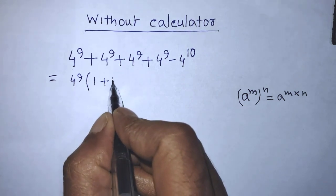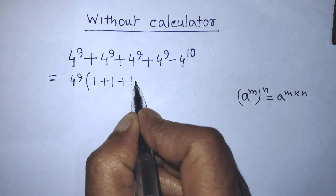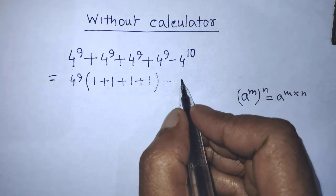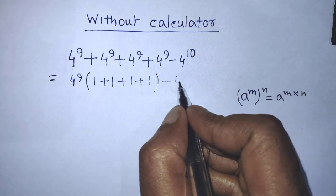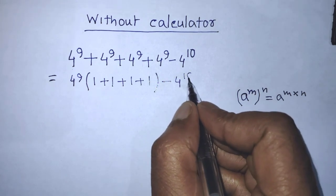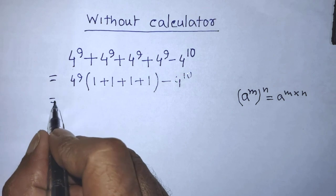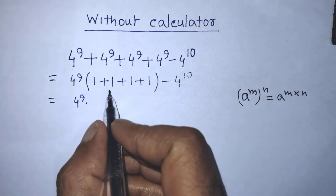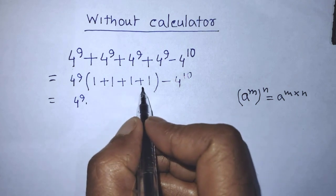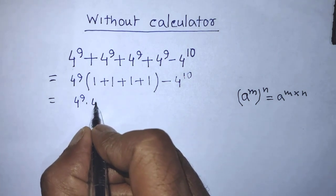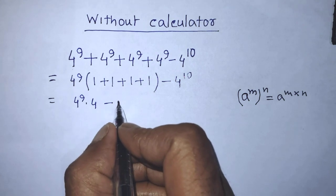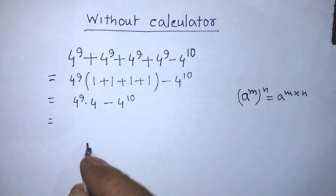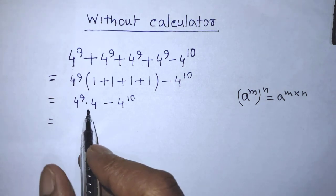We write: 4 to the power 9, times (1 plus 1 plus 1 plus 1), minus 4 to the power 10. Then we simplify: 4 to the power 9 times 4, since 4 times 1 added four times gives 4, minus 4 to the power 10.